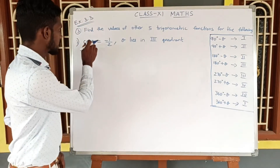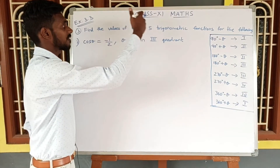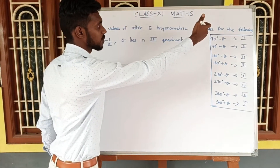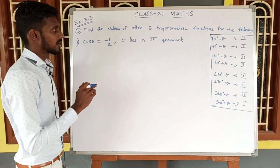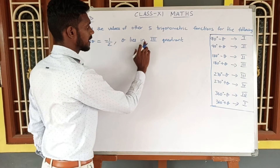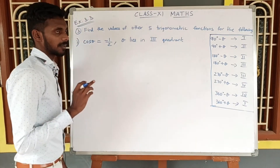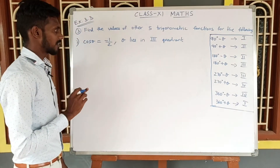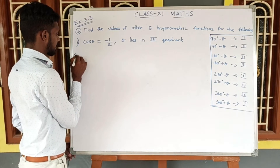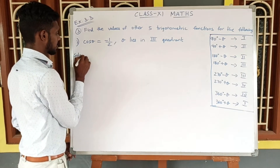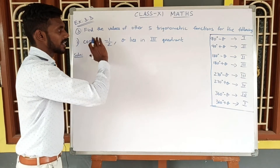So, if we get the cos θ value, we can find the other 5 trigonometric values. We have the information that θ is in the third quadrant. So first, we can solve using a full identity to solve the problem.